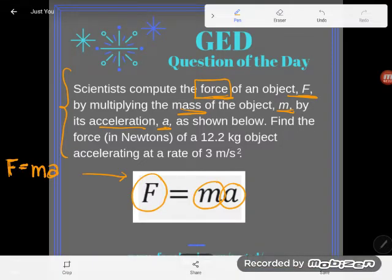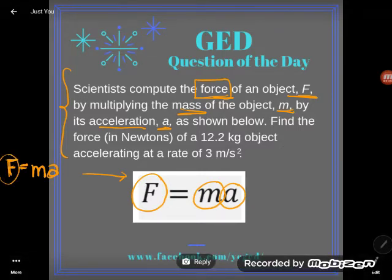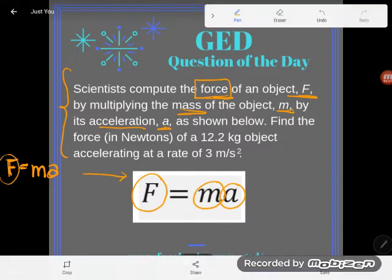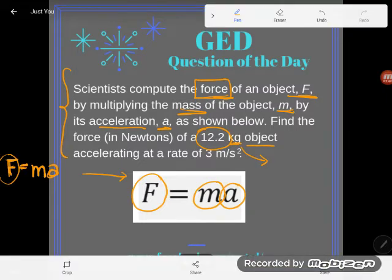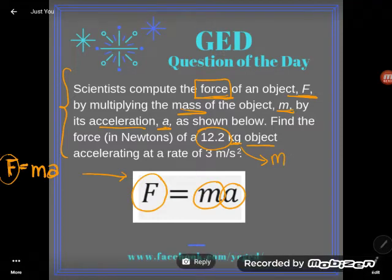It says find the force, find the force. So F is the thing we don't know, it's the thing we're finding, of a 12.2 kilogram object. Do you know what a kilogram is? Kilogram, like pounds, is kind of like pounds, it's kind of like weight, but we refer to kilograms as mass.